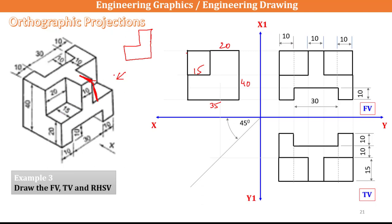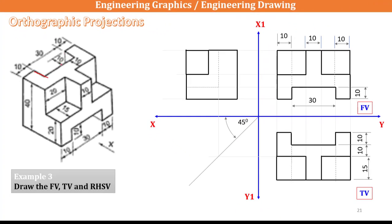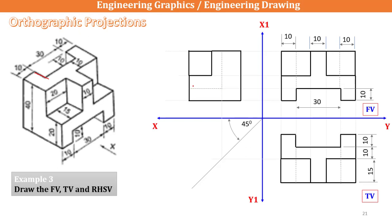There is a hole at the bottom, and as well as here there is some kind of a bifurcation. For the bottom bifurcation I am going to represent two lines — one line here and one line here — for the representation of this particular L-shape surface. And for the hole, I am representing it with a dotted line. This completes my right-hand side view. This is the basic way of drawing orthographic projections for this particular figure.